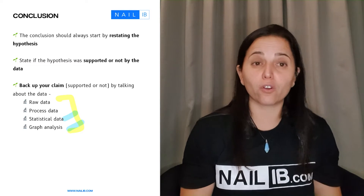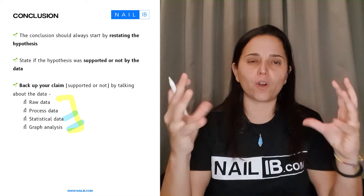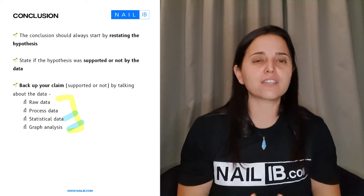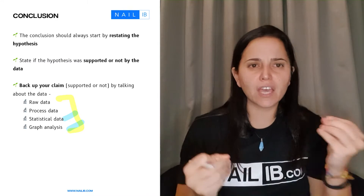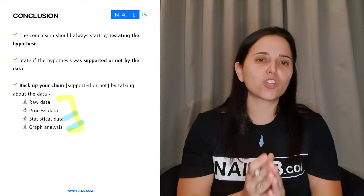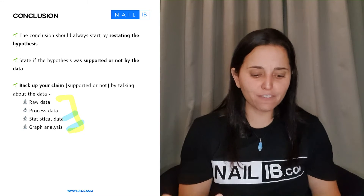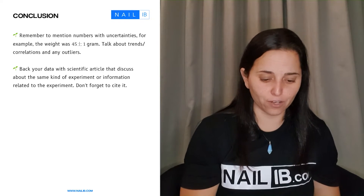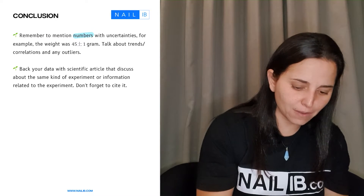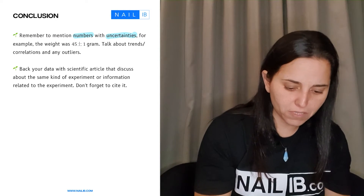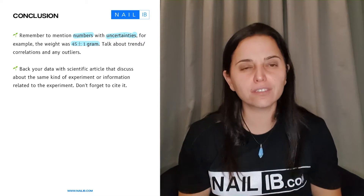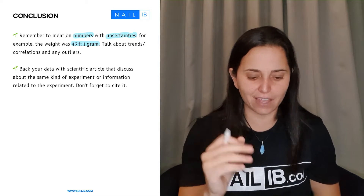You can also talk about your graph again — the same information you put under your graph — discussing whether the data was statistically different, and whether it showed a positive or negative trend, correlations, and so on. That is your backup. Whenever you reference numbers, make sure to include the uncertainty next to them — for example, 45 ± 1 gram. Little communication details like these are very important.